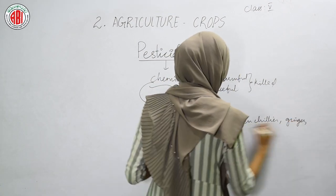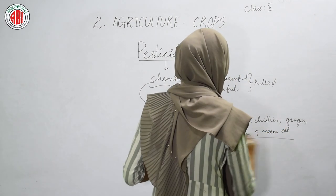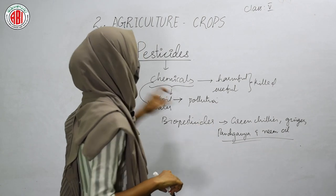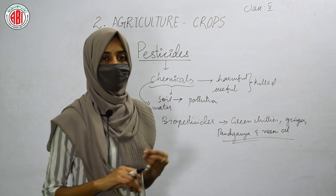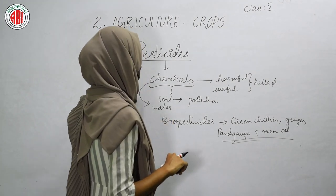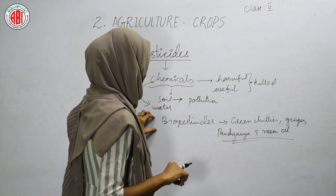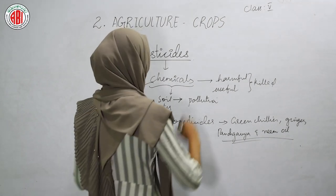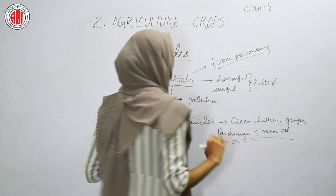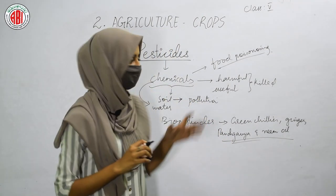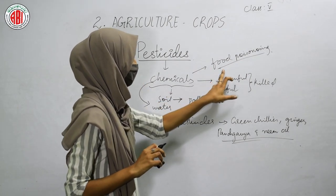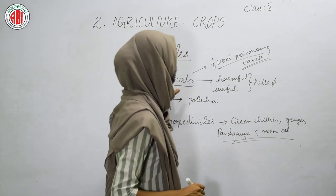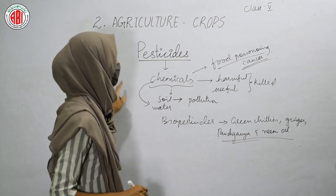Bio-pesticides can be made from natural materials like green chilies, ginger, Panch Gavia, neem, and other available materials. By applying these bio-pesticides farmers can control pests in their fields. If farmers spray chemicals over crops, those crops can become poisonous and lead to food poisoning, even causing dreadful diseases like cancer. Farmers should avoid chemical pesticides and use bio-pesticides instead.